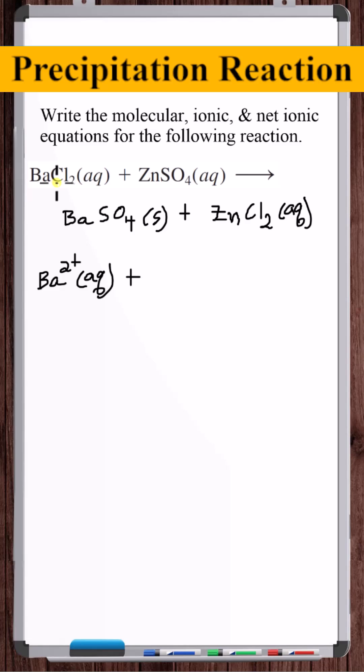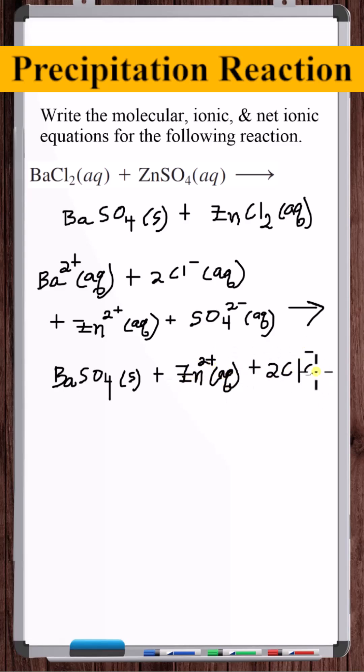There's two Cl minuses. This is the ionic equation.